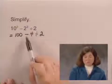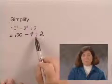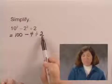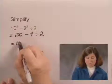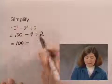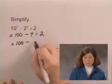The operations that are left are subtraction and division. So, in this next step, I want to perform the division 4 divided by 2. So, I have 100 minus 4 divided by 2 is 2.